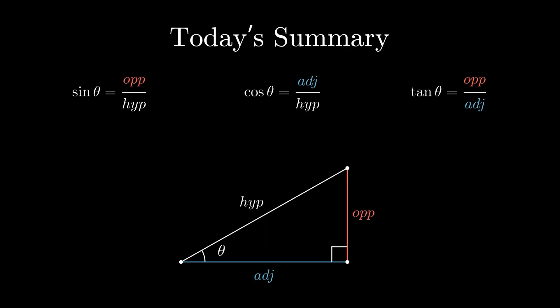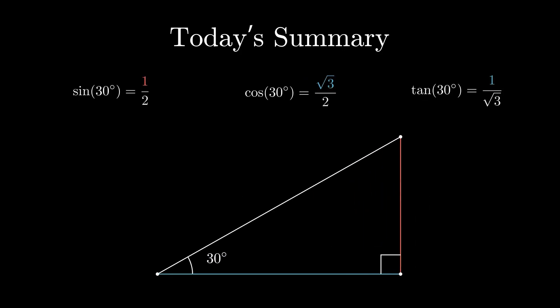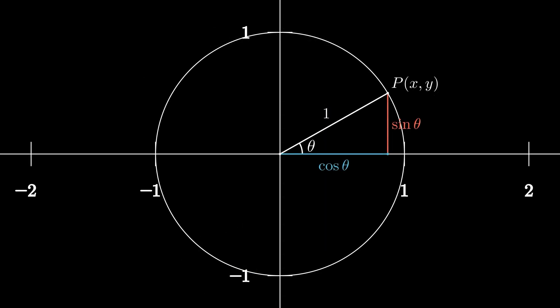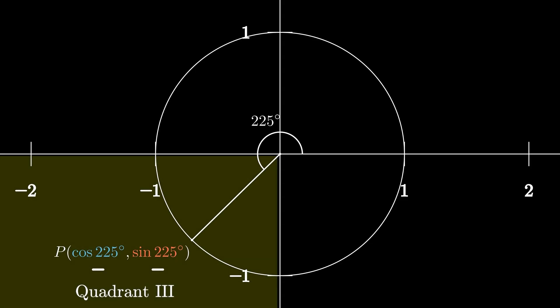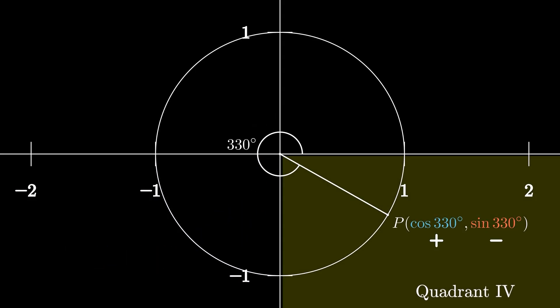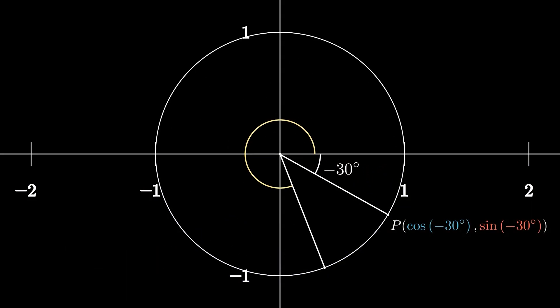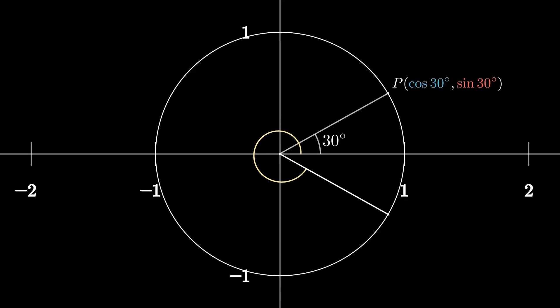Alright, we began with triangles, simple shapes and simple ratios. But as we turned those triangles and placed them in a circle, something amazing happened. We extended trigonometry beyond 90 degrees, beyond triangles, and into a system that works for every angle: positive, negative, or even beyond a full rotation.